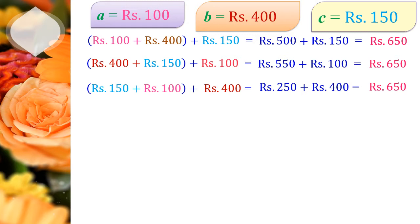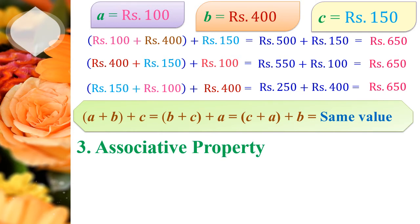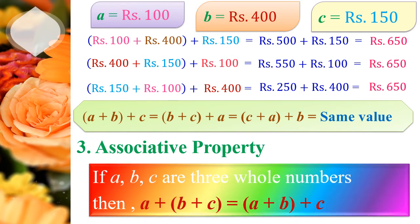So we learn from this: when we add three or more whole numbers, the numbers can be grouped in any manner and the sum remains the same. We define the associative property as: if A, B, C are three whole numbers, then A plus (B plus C) equals (A plus B) plus C.